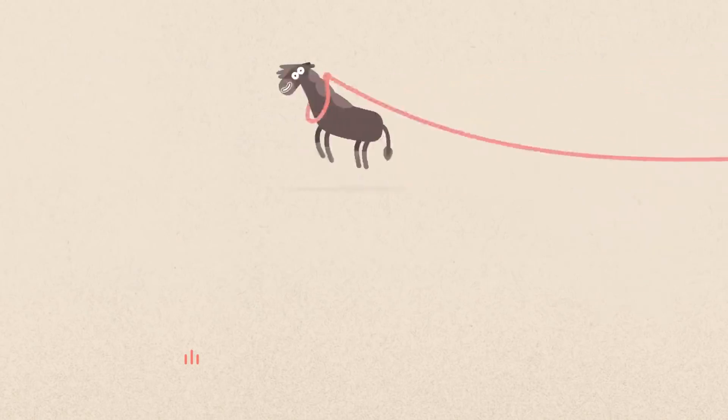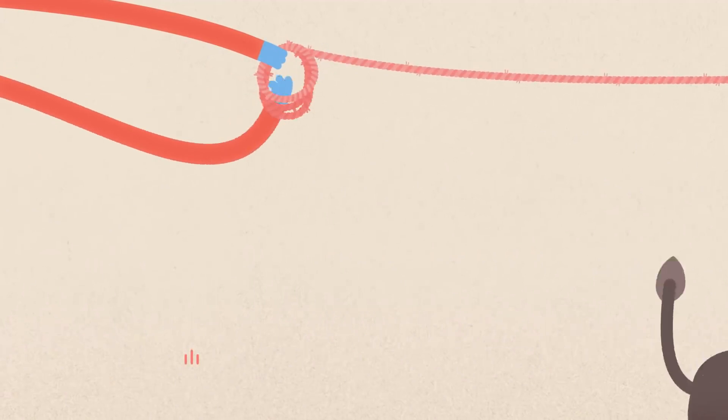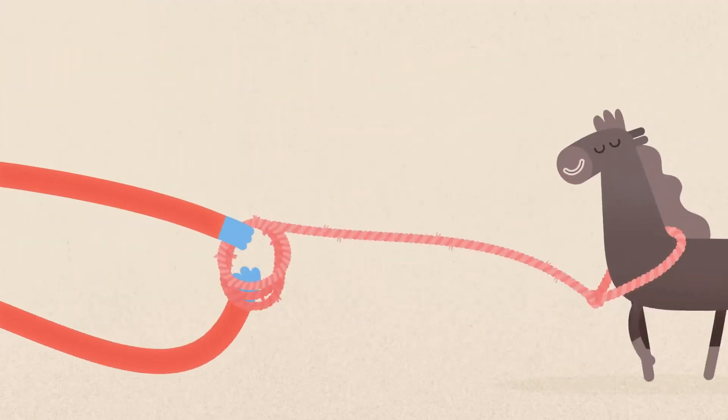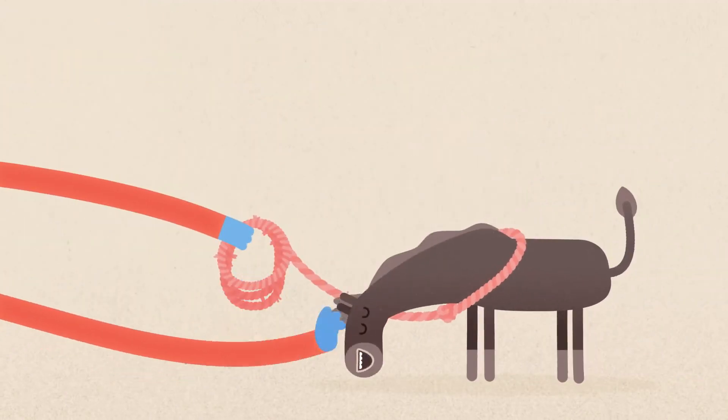The horse runs around, feeling like it's got all the space in the world. But very slowly, the rope's brought in, and the horse adjusts to this feeling, until it comes to a natural place of rest.